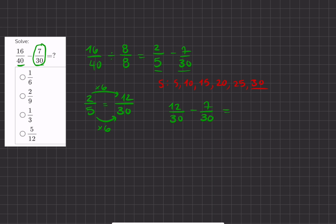We'll do 12 minus 7, which is 5, divided by our common denominator of 30.